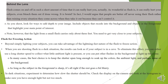Flash for freezing action. Beyond simply lighting your subjects, you can take advantage of the lightning-fast nature of the flash to freeze action. When you are shooting flash in a dark situation, the result can look as if your subject is in a cave. To eliminate this effect, you can either use a long shutter speed to collect what little ambient light is present, or you can put other flashes in the background to light up the scene. In many cases, the best choice is to keep the shutter open long enough to soak up the colors, the ambient light, and perhaps some of the background. As long as the subject in the foreground is sharp, it's alright if the rest goes a bit soft.